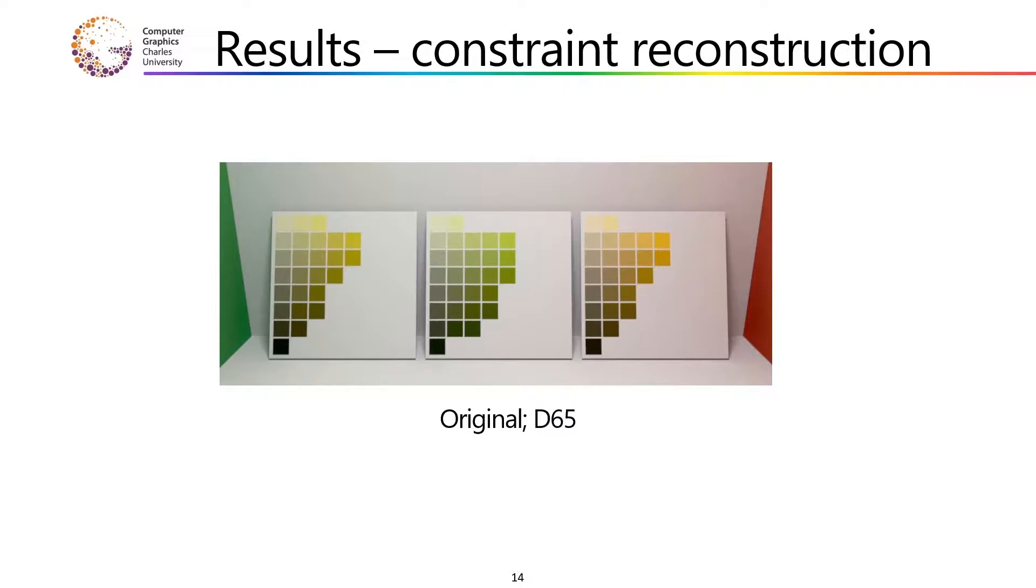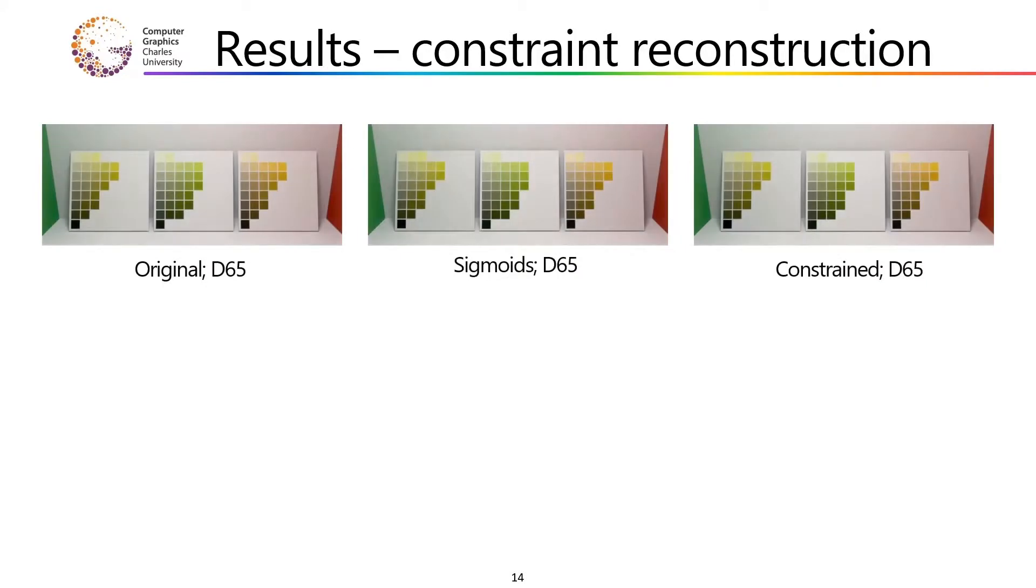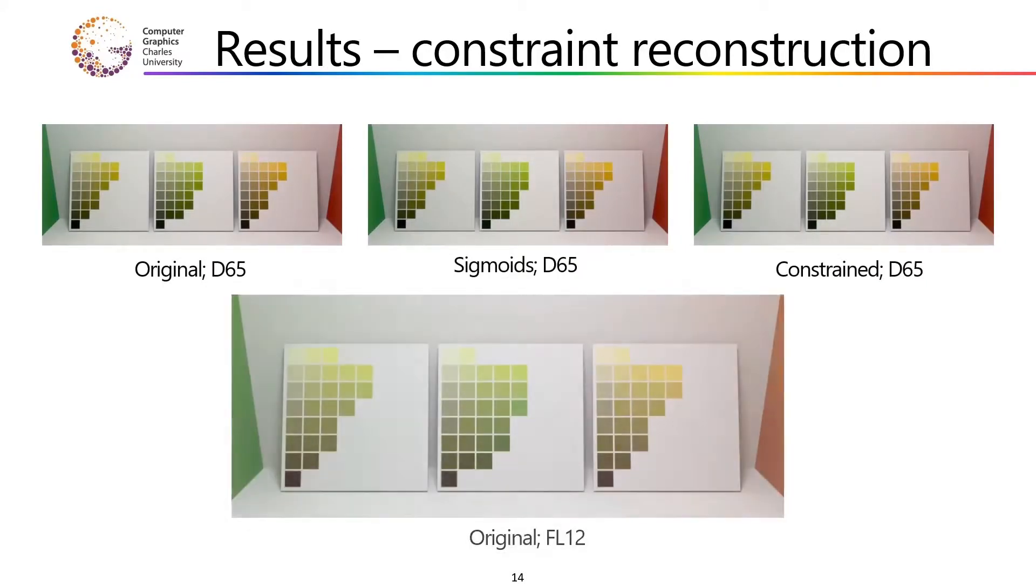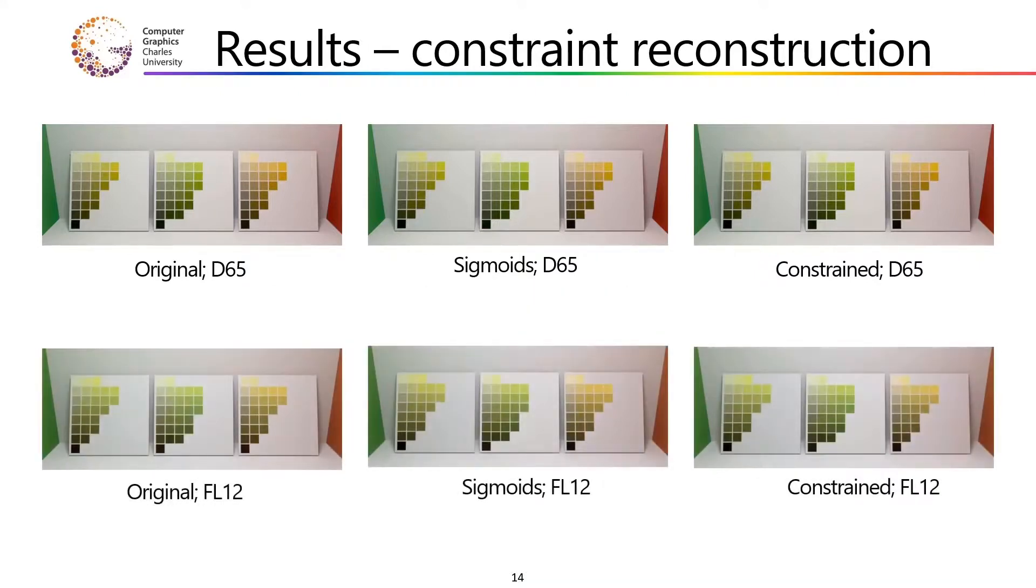Under the D65 illuminant, which is the daylight illuminant according to which all patches have been uplifted, there is no difference between the three renders. Under the fluorescent illuminant, though, we can see that while the sigmoid uplift deviates from the original, our constraint uplift preserves the gradient breakdown almost perfectly.